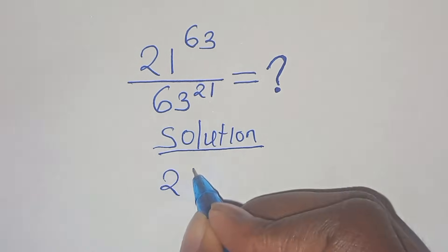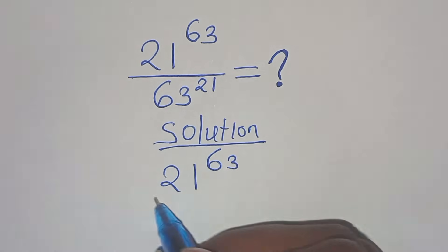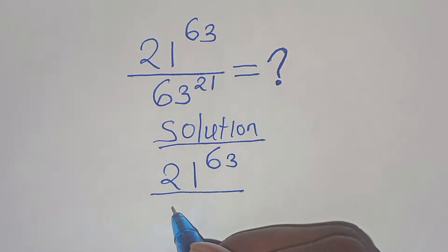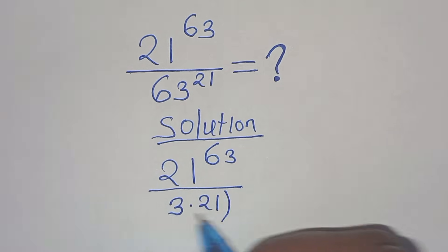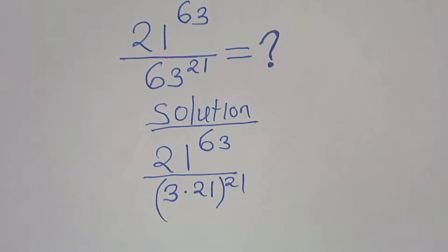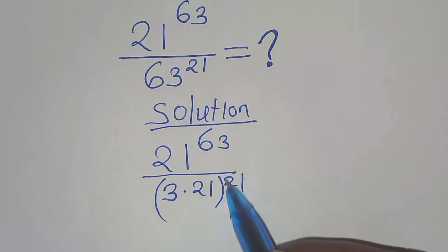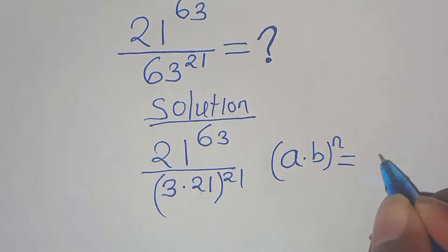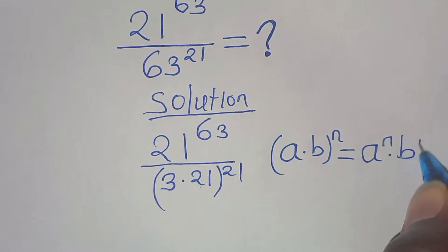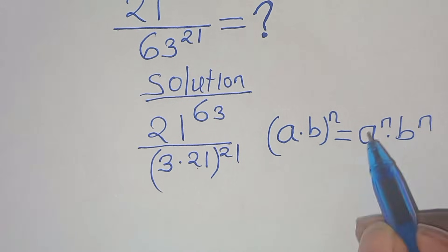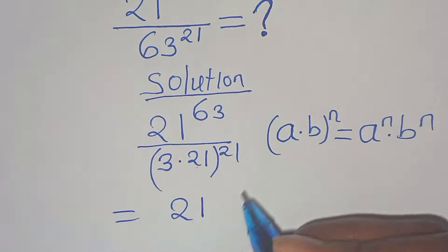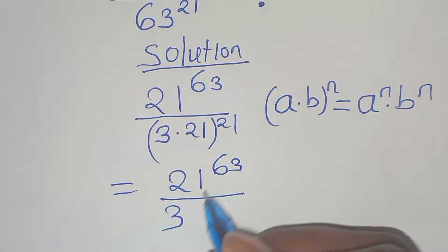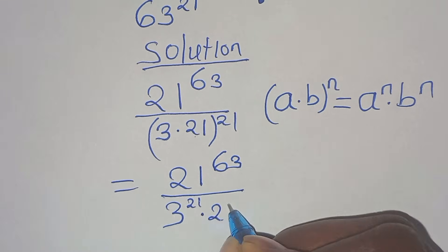So now we have 21 raised to the power of c×3 divided by c×3 to the power of 21. We can express c×3 to the power of 21 as 3 multiplied by 21 raised to the power of 21. This is in the form of a multiplied by b raised to the power of n, which can be expressed as a to the power of n times b to the power of n. Applying this exponent property, we have 21 raised to the power of c×3 divided by 3 to the power of 21 times 21 to the power of 21.